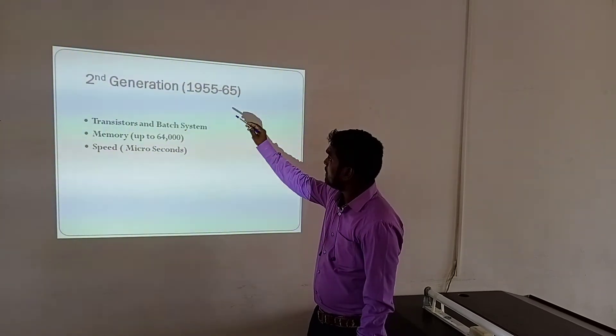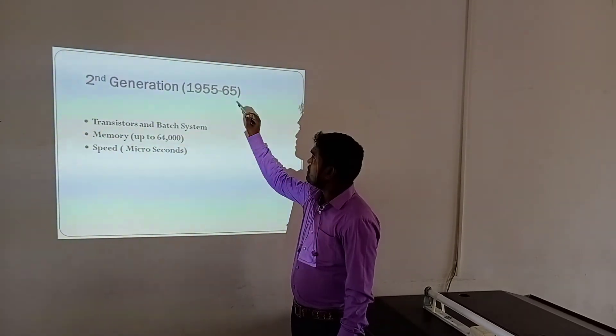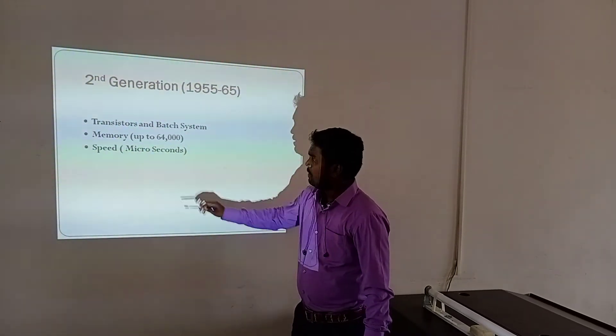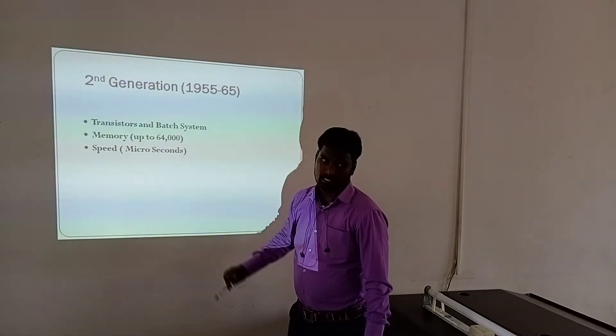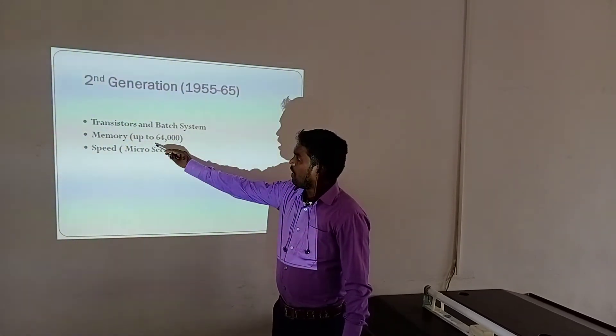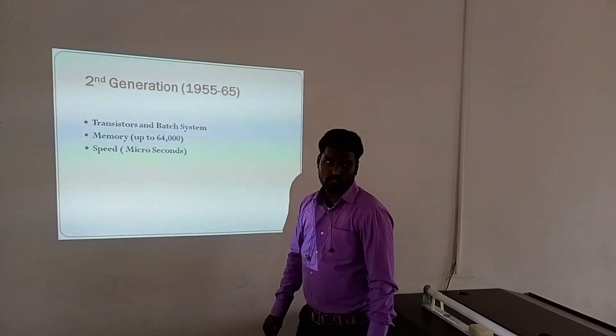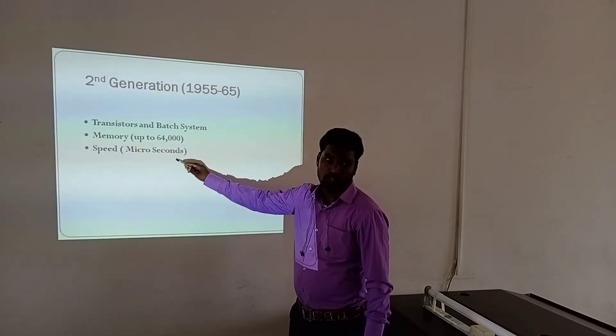Second Generation, introduced 1955 to 1965. Transistors and batch systems were used. Memory up to 64,000 RAM, and speed was in microseconds.